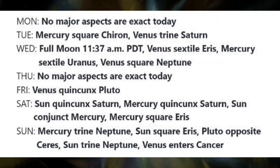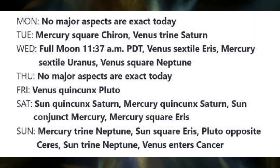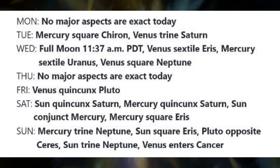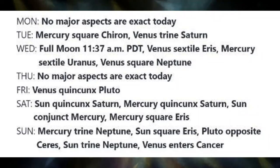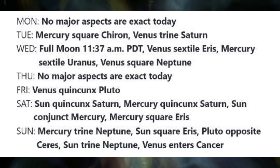On Saturday and Sunday, the Sun is quincunx Saturn, Mercury is quincunx Saturn, the Sun is conjunct Mercury, Mercury is square Eris, and the Sun is square Eris. All of these aspects combine to make miscommunications possible over the weekend. This is due to a heightened feeling of vulnerability and a tendency to take things personally. However, Mercury is also trine Neptune and the Sun is trine Neptune. So, if we remember to connect with our heart before speaking, and to focus on being accepting of another's perspectives, conversations will go more smoothly this weekend.